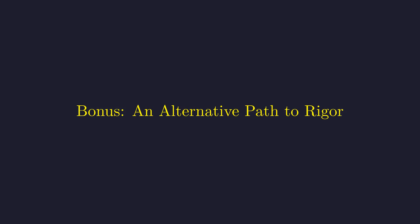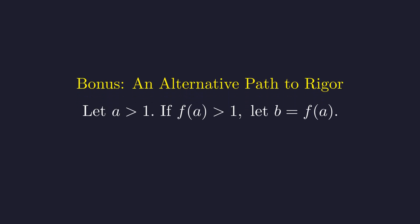As a bonus, here's a completely different way to prove that f of x must be a power function, this time by proving it's monotonic. Consider some number a greater than 1. Let's assume for contradiction that f of a is also greater than 1. We'll call this value b.